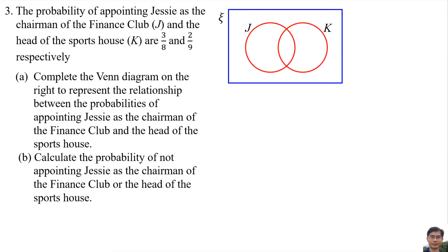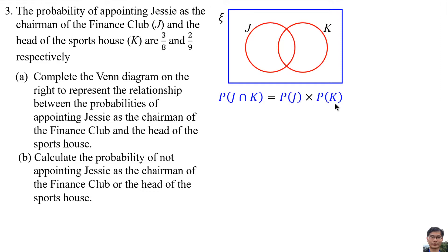Number 3. The probability of appointing Jesse as the chairman of the finance club J and the head of the sport house K are 3 over 8 and 2 over 9 respectively. Complete the Venn diagram to present the relationship between the probability of appointing Jesse as chairman of the finance club and head of the sport house. P(J intersect K) equals P(J) multiplied by P(K).